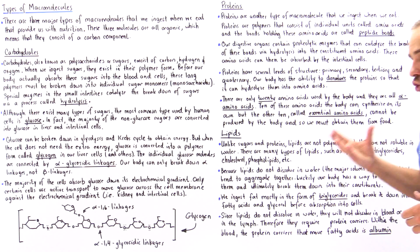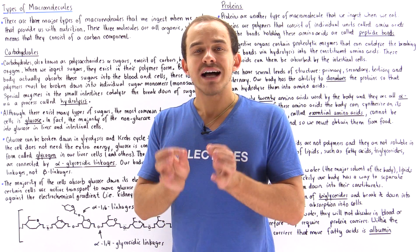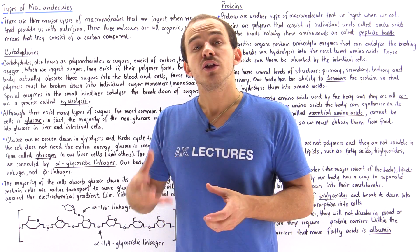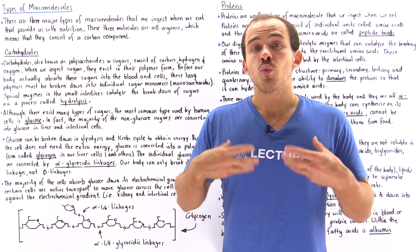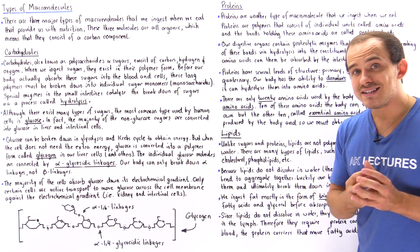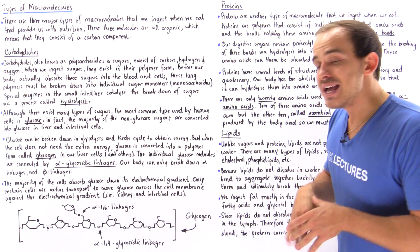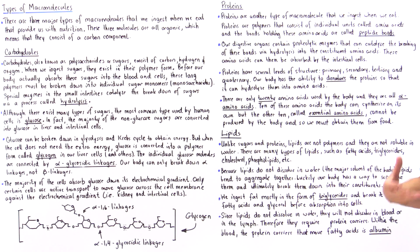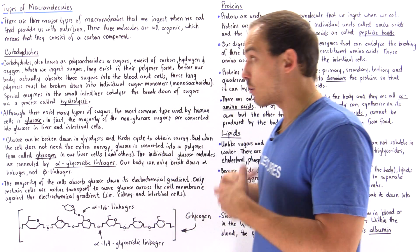Since lipids do not dissolve in water, they do not dissolve in blood or lymph. We therefore need specialized types of proteins to carry those lipids inside our blood system. Inside the blood, the carrier protein for fatty acids is known as albumin, and we'll discuss this in much more detail when we cover the cardiovascular and blood systems.